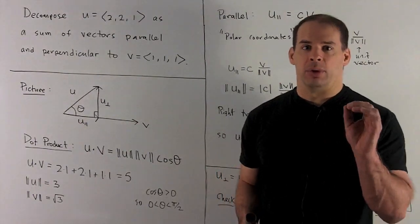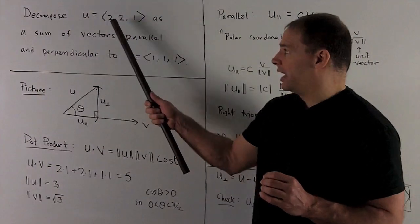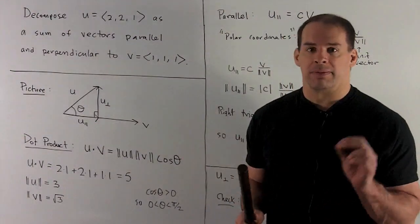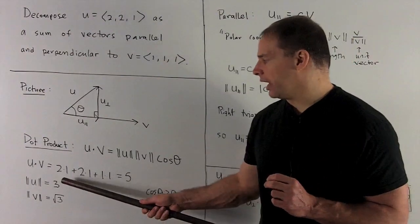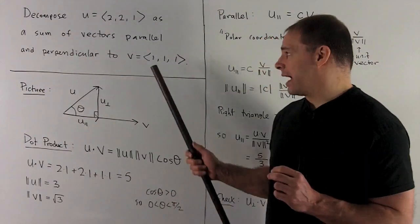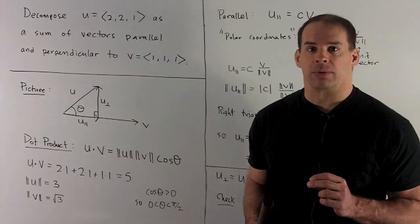Now, we'll also need the length of u and v, so let's get those while we're here. The length of u: I'm going to take squares and sum them, so we have 4 plus 4 plus 1 gives me a 9, square root gives our length 3. For v, we have 1 squared, 1 squared, 1 squared gives me a 3, so that'll be square root of 3.